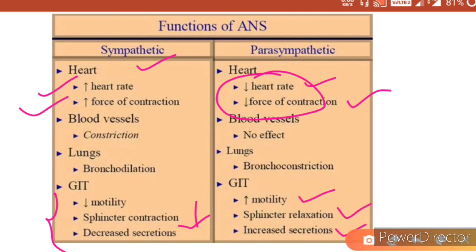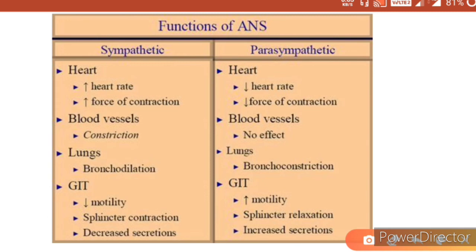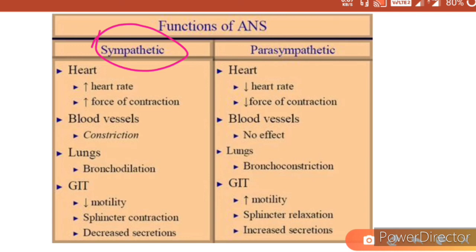On blood vessels, the parasympathetic system has no effect, whereas the sympathetic system causes vasoconstriction. In the lungs it does the opposite — bronchodilation. When the sympathetic system is active during fight-or-flight, we need more air to breathe, so it causes bronchodilation. Parasympathetic causes bronchoconstriction. To increase blood pressure, the sympathetic system causes vasoconstriction, whereas the parasympathetic system has no effect on it.